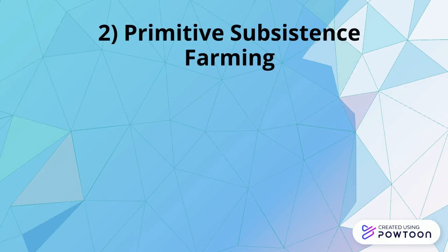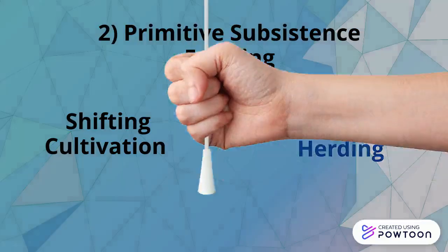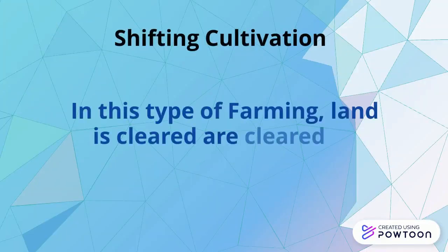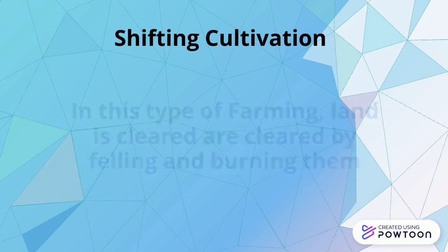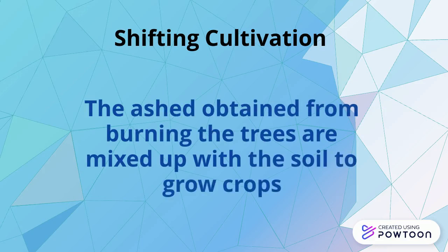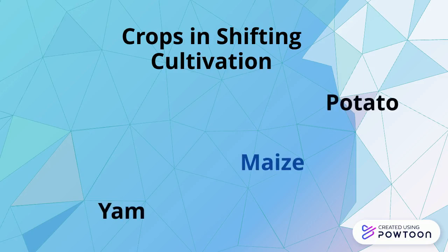Primitive subsistence farming. Primitive subsistence farming is further divided into shifting cultivation and nomadic herding. In shifting cultivation, land is cleared by felling trees and burning them. The ashes obtained from burning are mixed with the soil to grow crops. Crops grown in shifting cultivation are maize, yam, potato, and cassava.